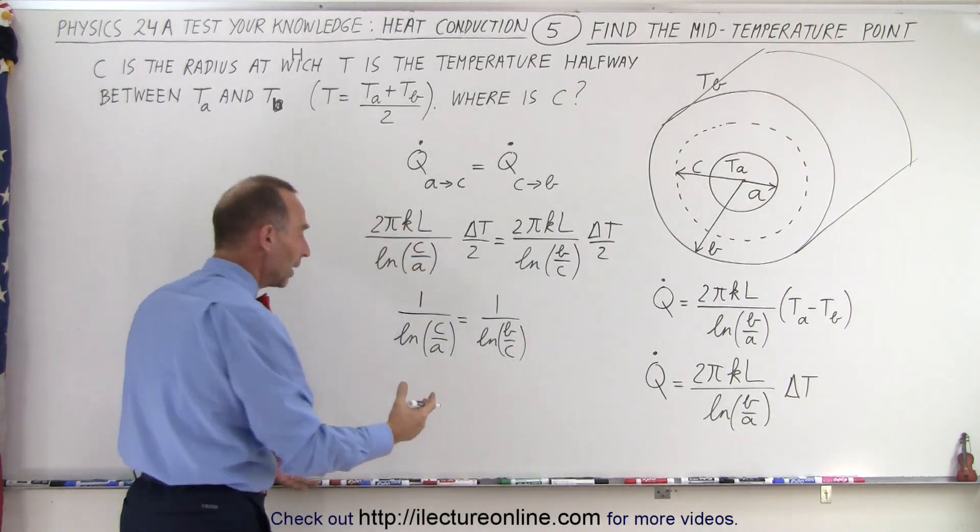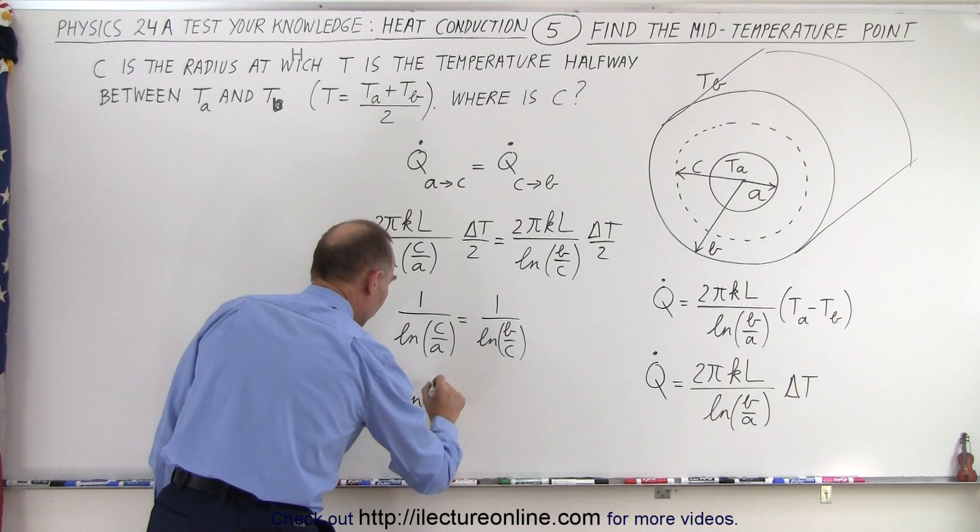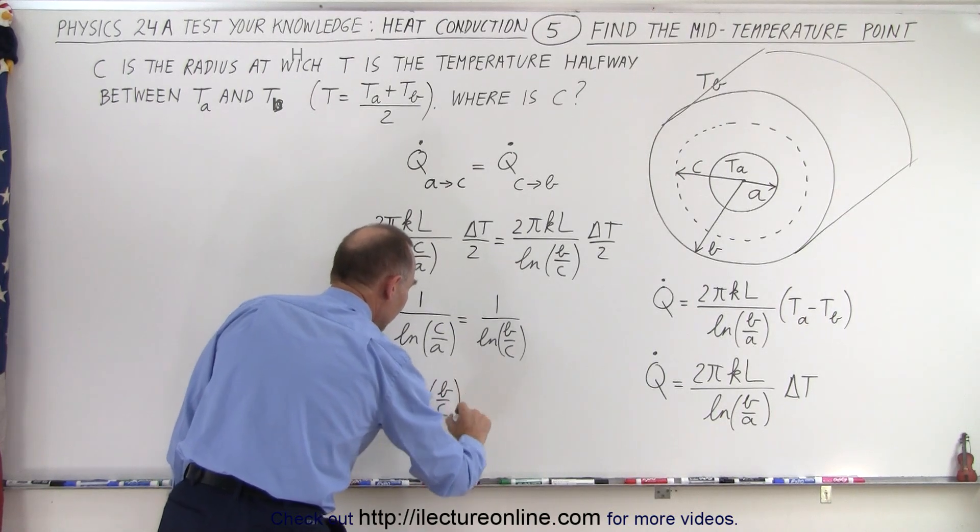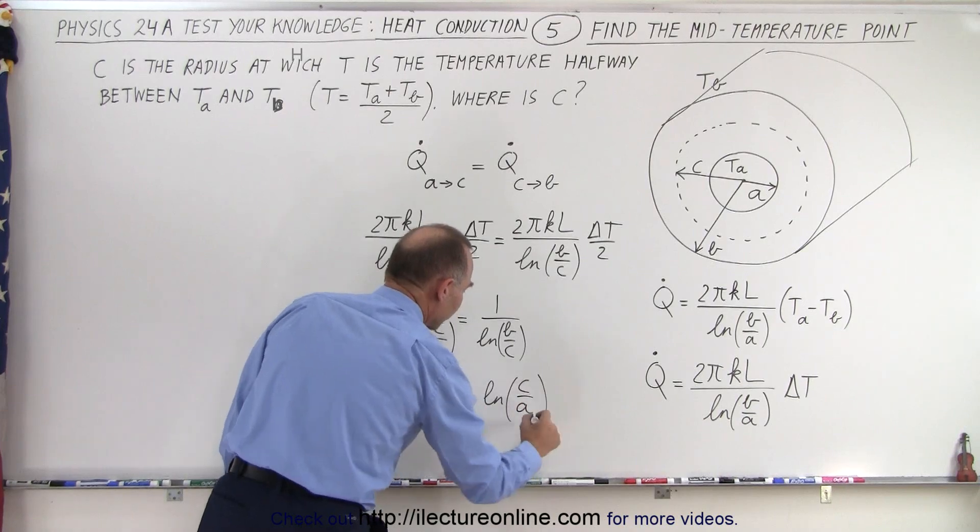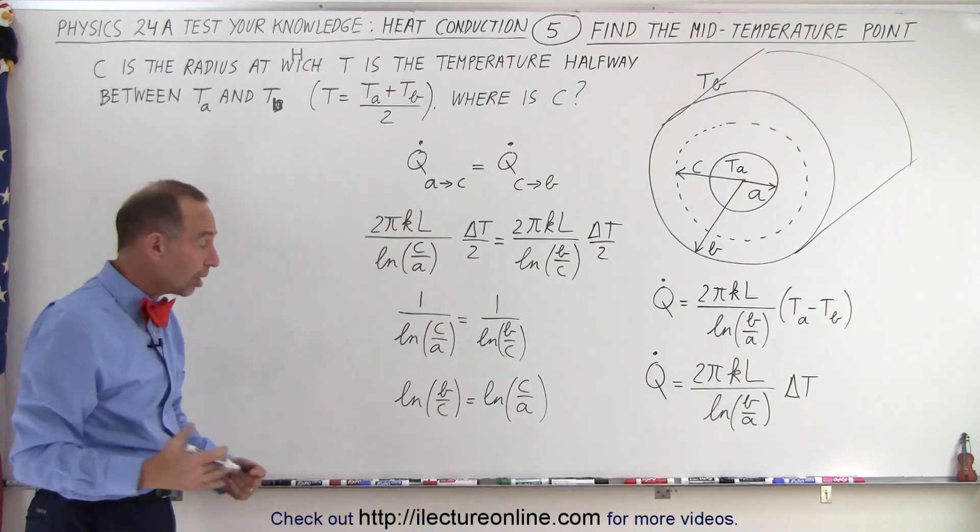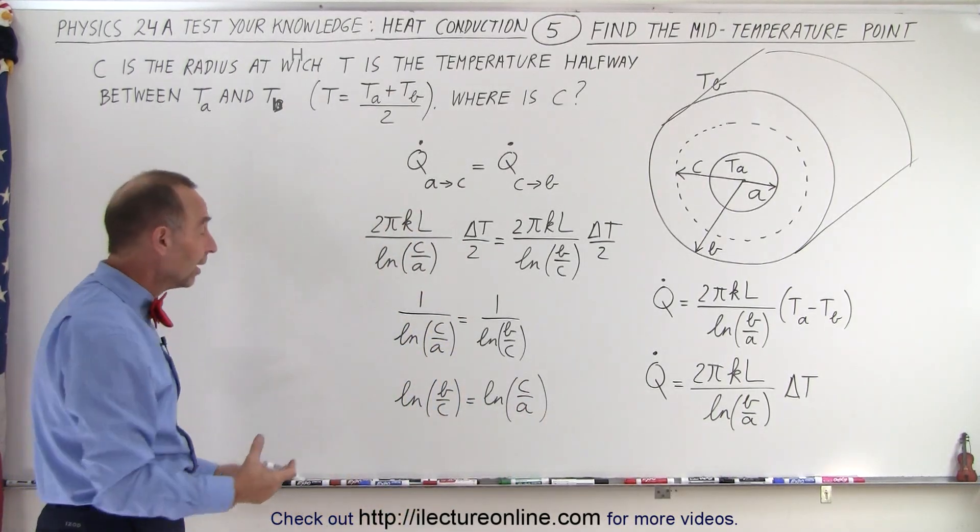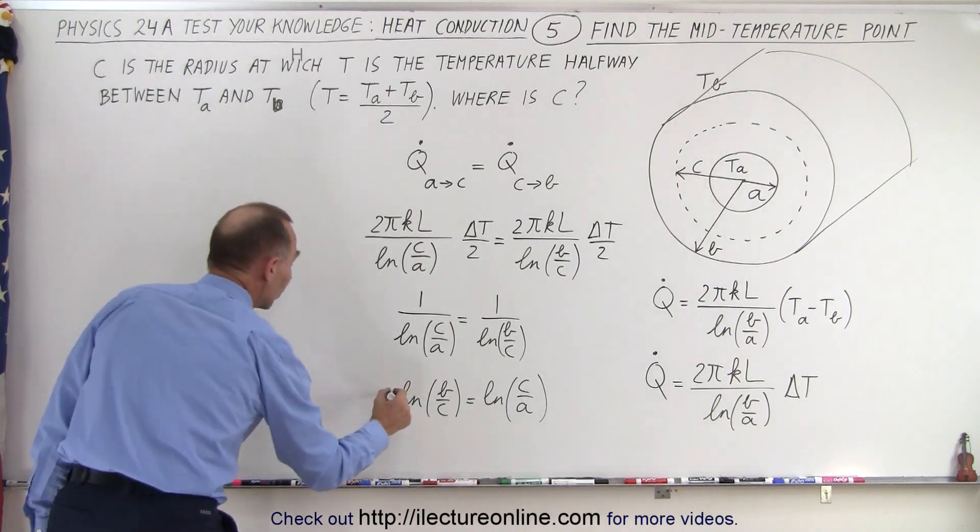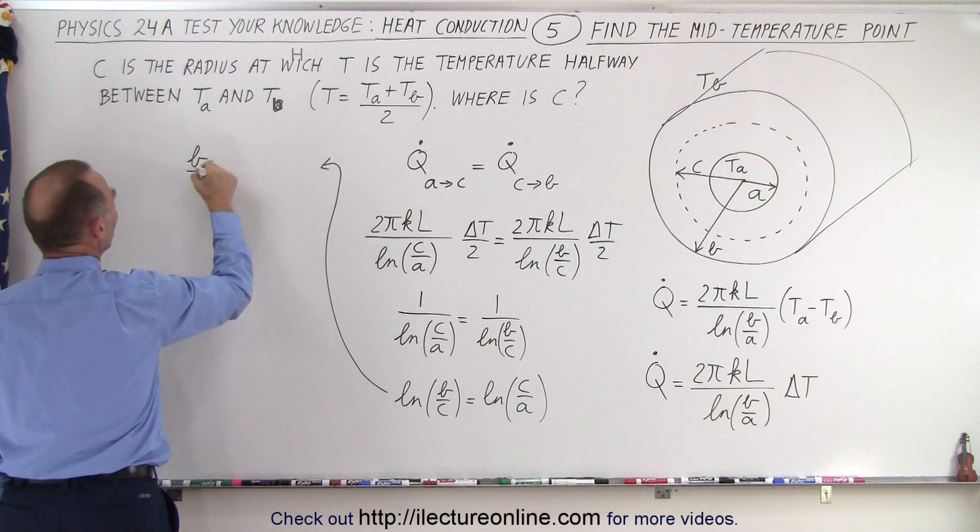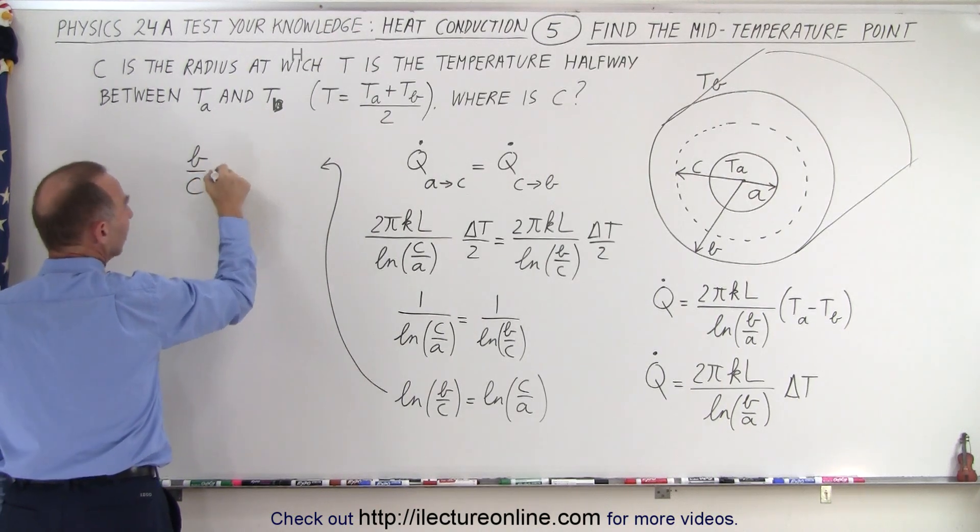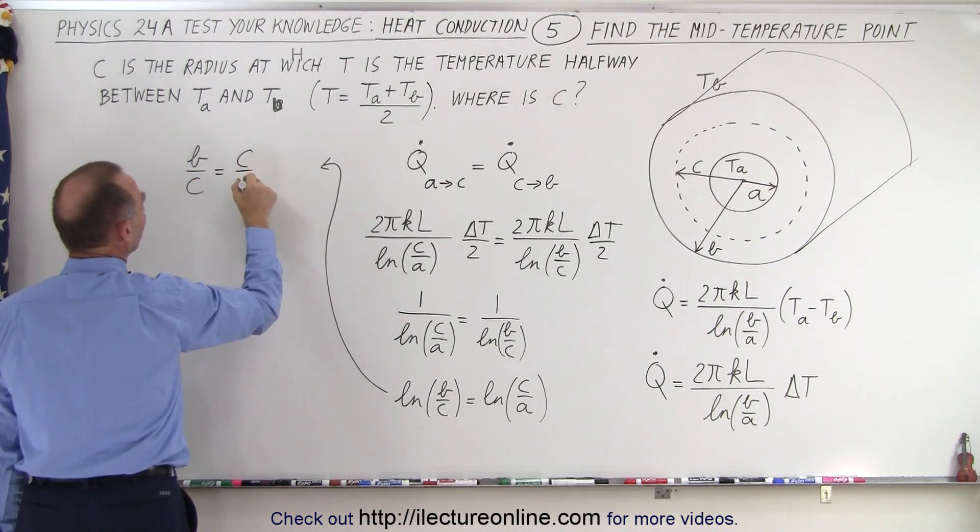And then cross multiplying, we can then say that the natural log of B over C is equal to the natural log of C over A. And of course if the natural log of two quantities are equal to each other, then those quantities must equal each other. So in other words we can then conclude that B over C is equal to C over A.